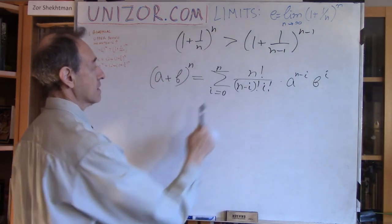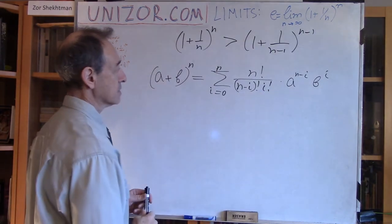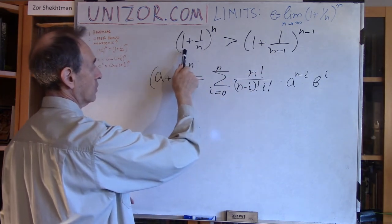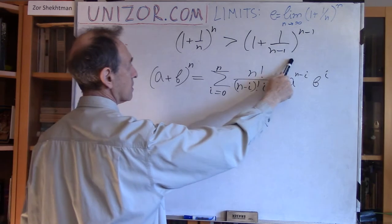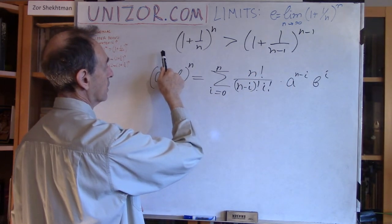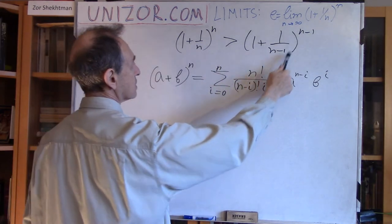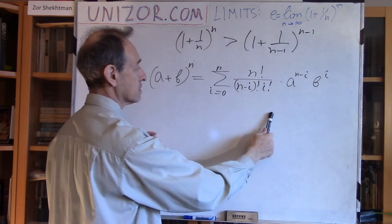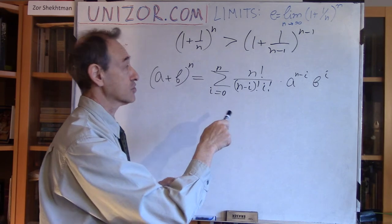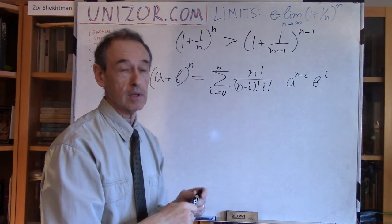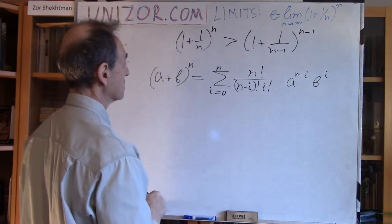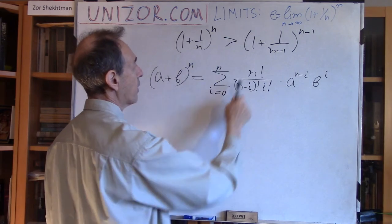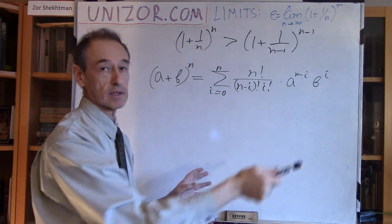One more thing: the number of elements in this sum is n in one case and n minus 1 in the other. So the left side has one extra member. What I'm going to do is compare the i-th member of this sum with the i-th member of that sum and show that one is greater than the other, for every i from 0 to n minus 1.